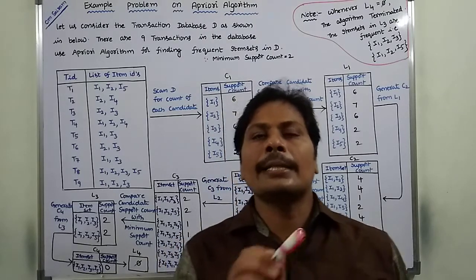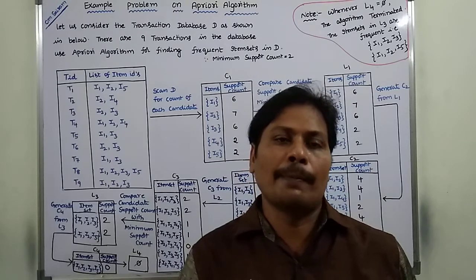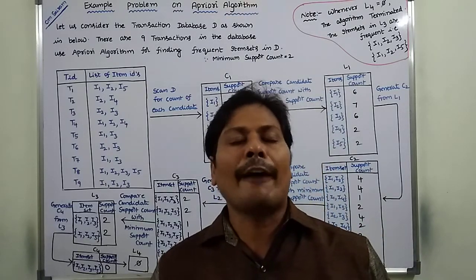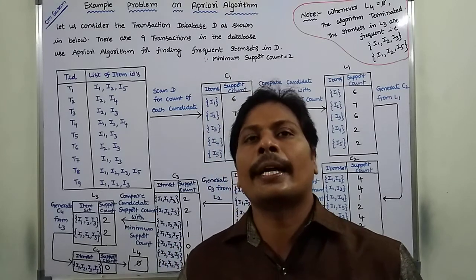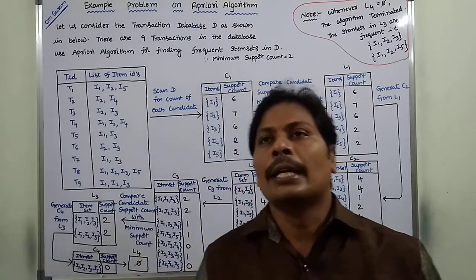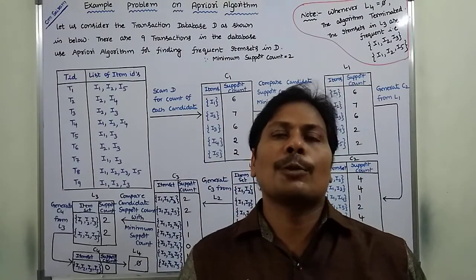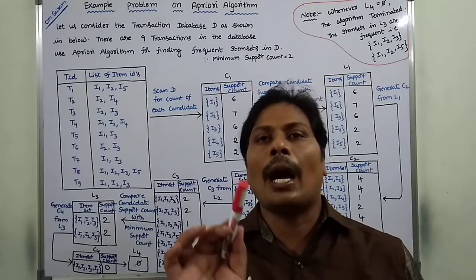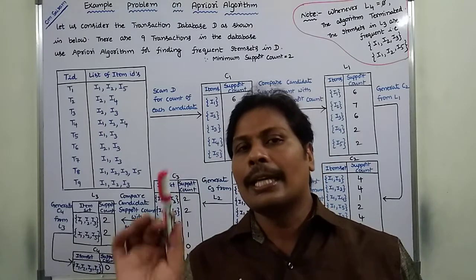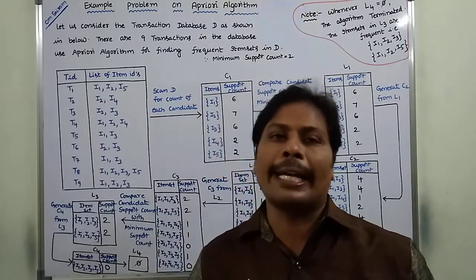First of all, what is the main objective of the Apriori algorithm? The Apriori algorithm is used for finding frequent item sets in the given transaction database. A frequent item set refers to items that appear frequently in the transactional database — those items are called a frequent item set.